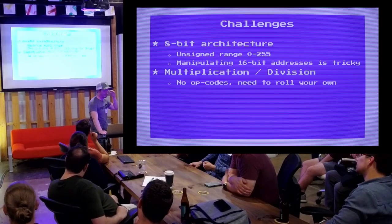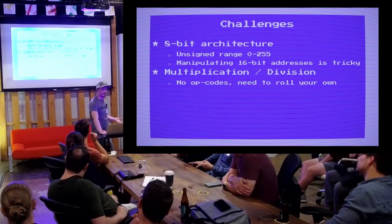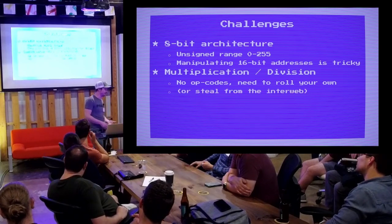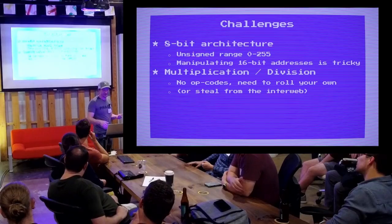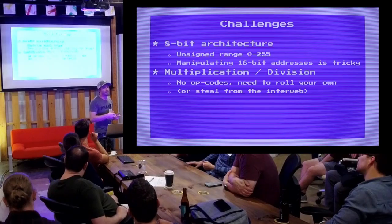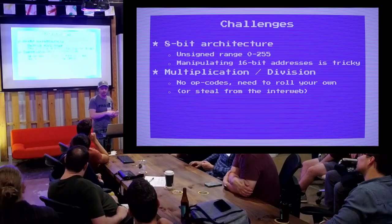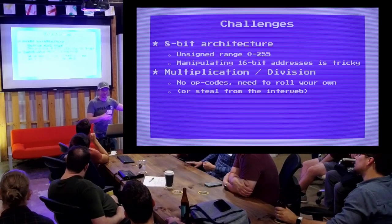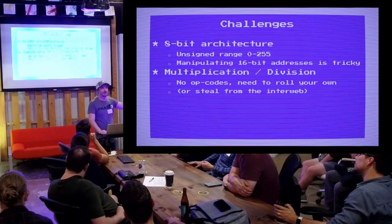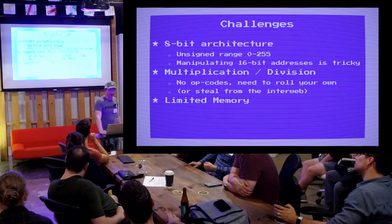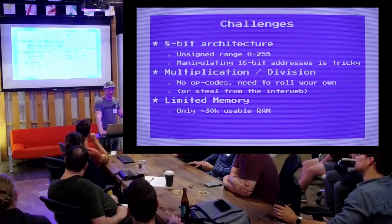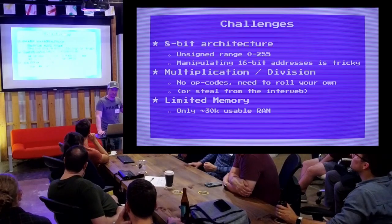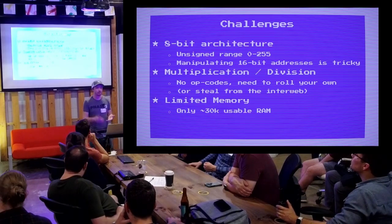Multiplication and division — there are no built-in opcodes for the Commodore 64 for this. You need to roll your own or steal it from the internet, which is what I did. There are places that have, for example, if you need to multiply two 8-bit numbers and get a 16-bit product, here's what that looks like — the fastest possible version is like 90 lines of code or something. And again, limited memory — roughly 30-something kilobytes of usable memory.